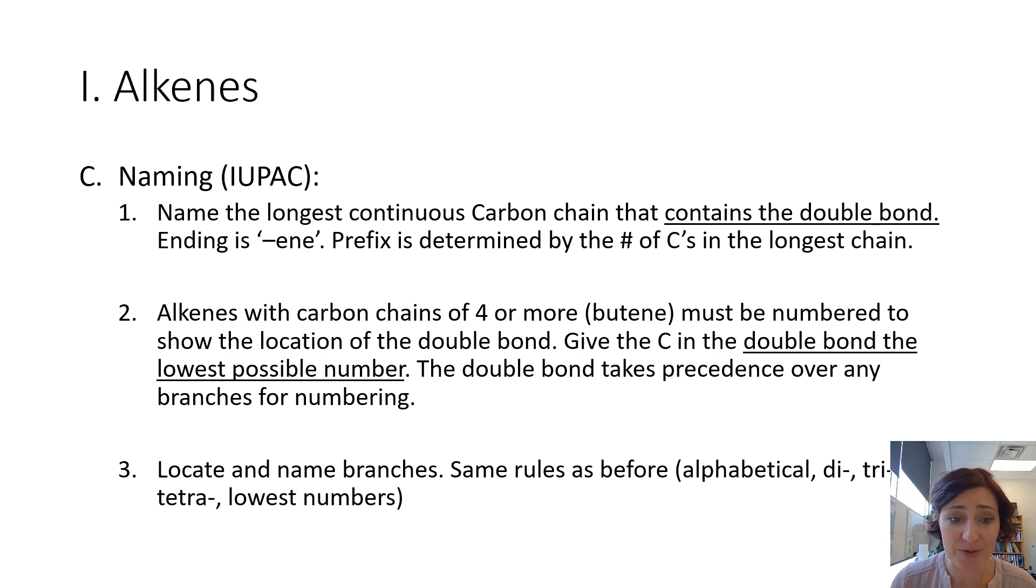And finally, you're going to get sick of hearing this, but we're going to locate and name the branches. The rules are the same as they always are. As you're naming them, you're going to make sure that those branches are listed alphabetically. You are going to say if you have two methyl groups, dimethyl or trimethyl, and you're going to try to give them the lowest numbers possible after you have numbered your double bond with the lowest number possible.